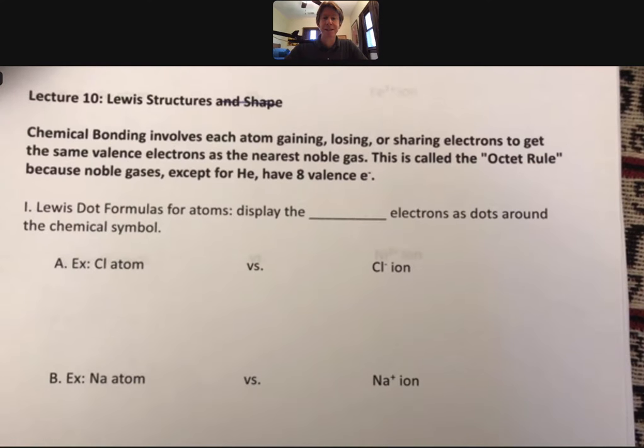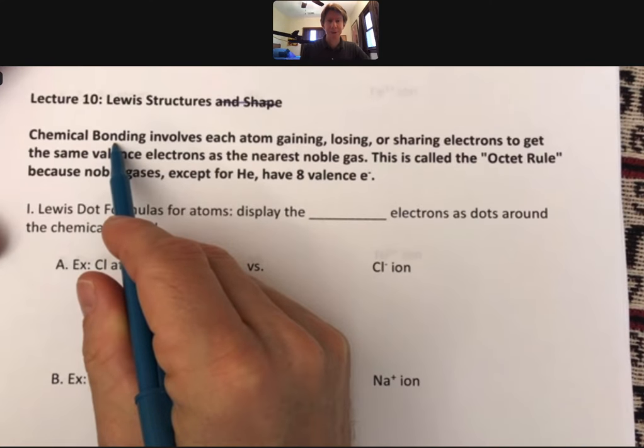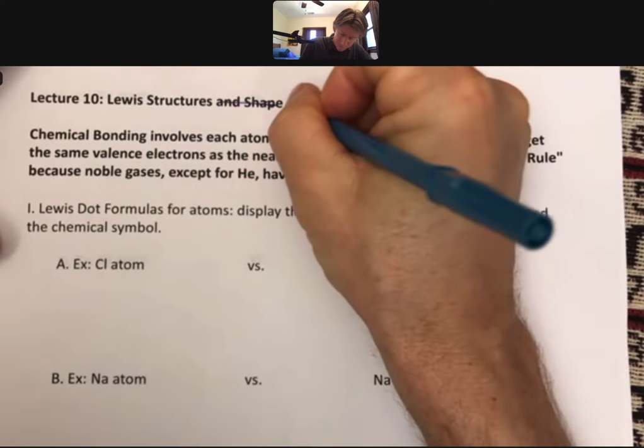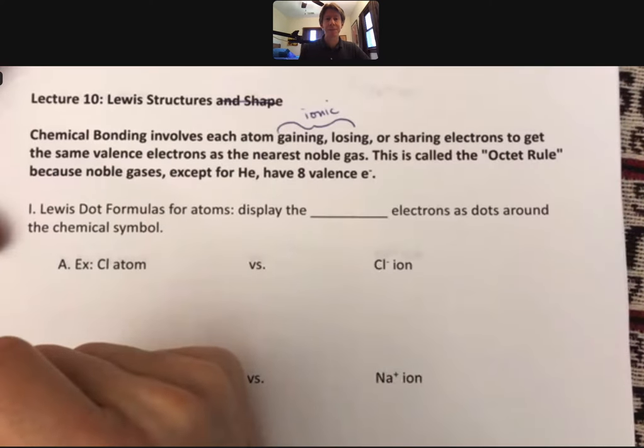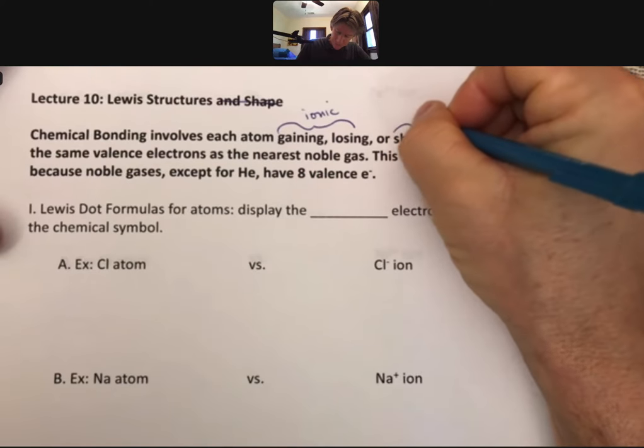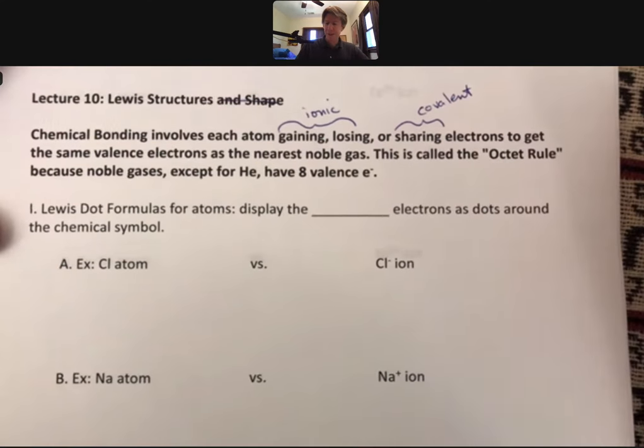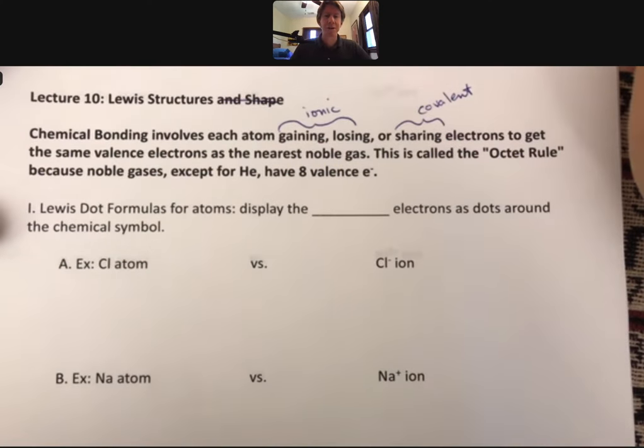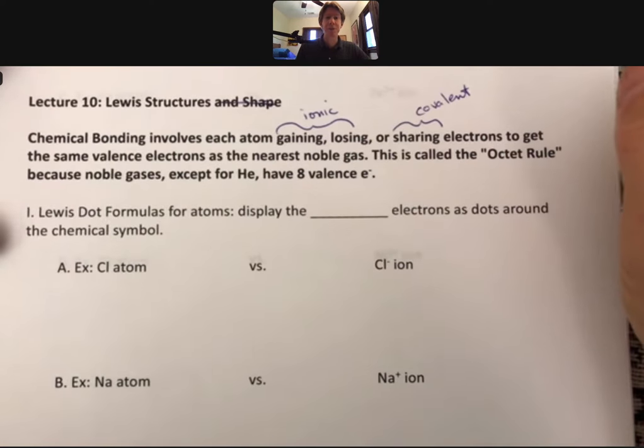Because noble gases, except for helium, have 8 valence electrons. For ionic chemical bonding, that's going to be involving atoms gaining or losing electrons. And sharing electrons, that's going to be covalent. Co basically means shared, and valence is going to refer to the fact that these are going to be valence electrons.